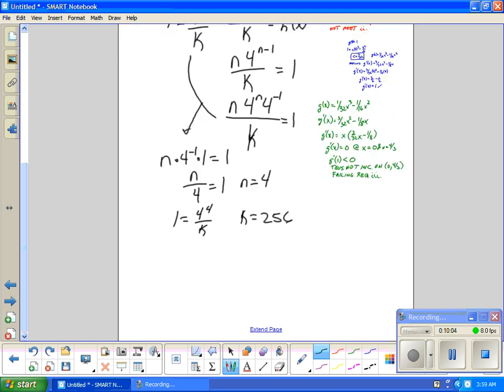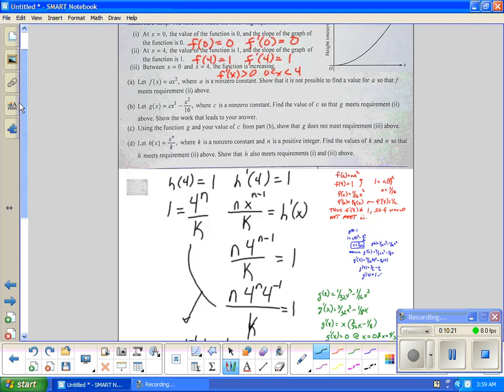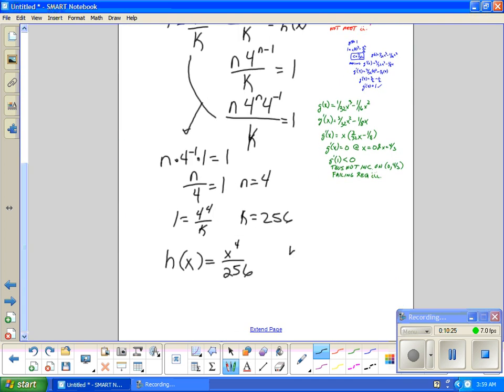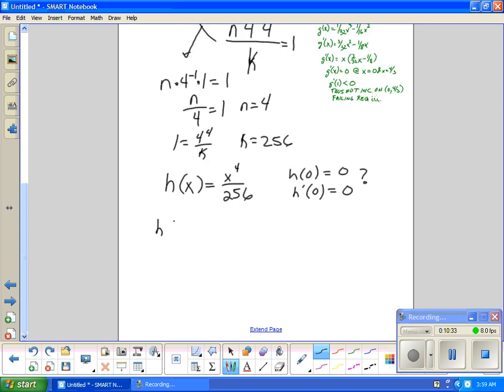So I did all this work and now I have a function, x to the fourth over 256. Now I have to show that this meets requirement one and three. Well, requirement one is at zero. So let's see if h(0) is zero and if h'(0) is zero. That's what we've got to check. So if I plug in h(0), I get zero to the fourth over 256 equals zero. Yes. And then h'(0) is going to be four zero cubed over 256, that equals zero, so yes. Meets requirement one.